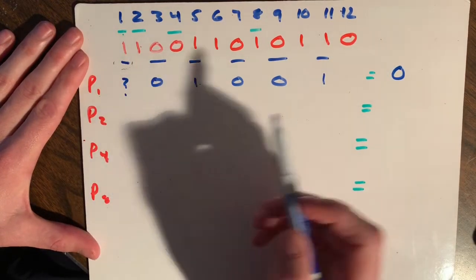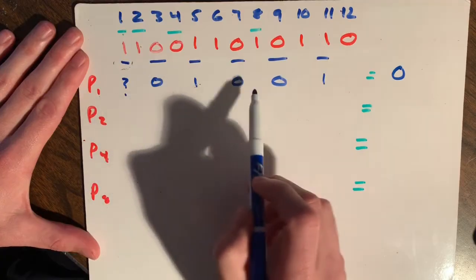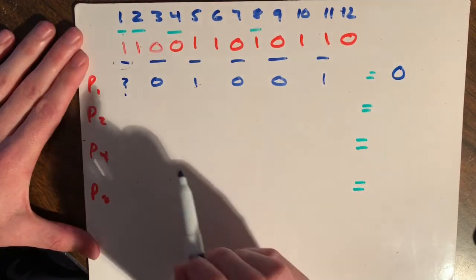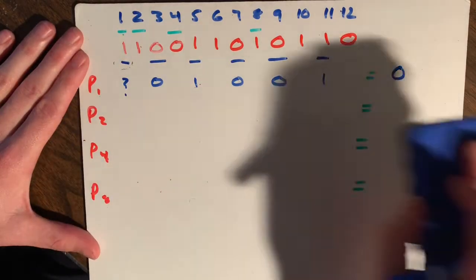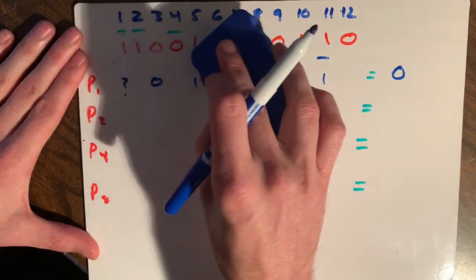Had that been three ones, we would put a one there. So anything that's odd, we're going to put a one. Anything that's even, we're going to put a zero. So now we are going to move forward to parity bit number two here.